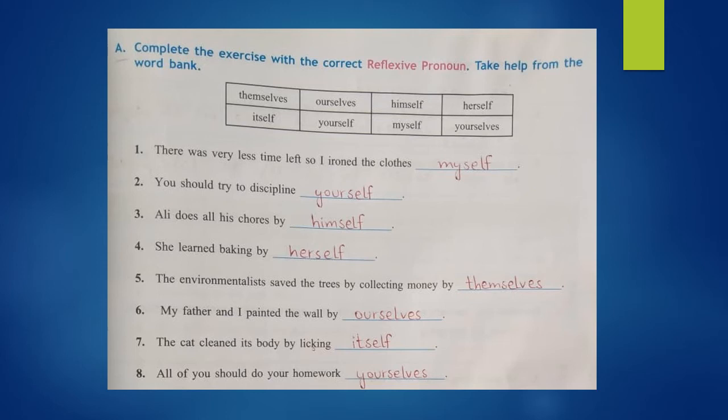Number five: The environmentalists saved the trees by collecting money by themselves. Number six: My father and I painted the wall by ourselves. Number seven: The cat cleaned its body by licking itself. As you know, the pronoun 'it' is used for animals, therefore 'itself' is used here. Number eight: All of you should do your homework yourselves. 'All of you' shows that 'you' is not referring to one person but more than one person, that is why 'yourselves' is used instead of 'yourself'.